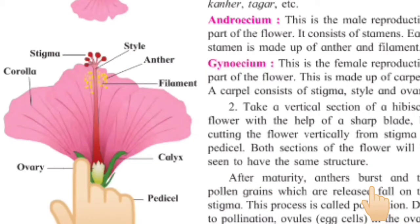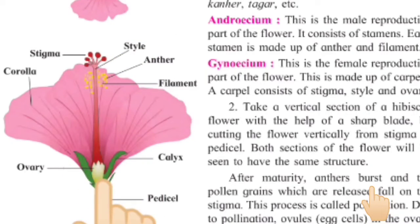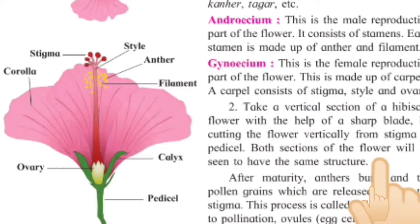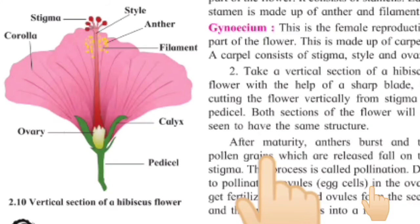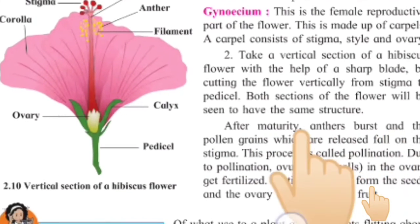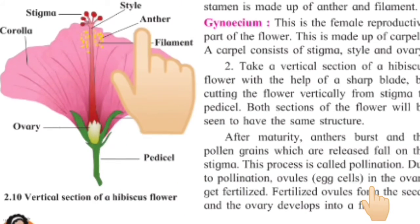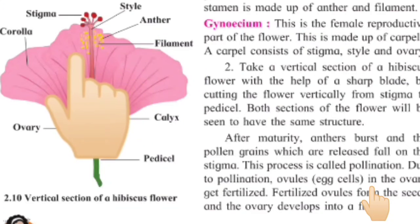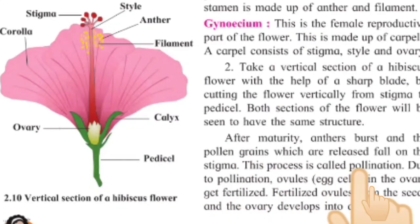Let's take an example: if you cut the hibiscus flower in a vertical section with a blade, the structure will be the same as explained in point number 2. After maturity, anthers burst and pollen grains which are released fall on the stigma. This process is called pollination.